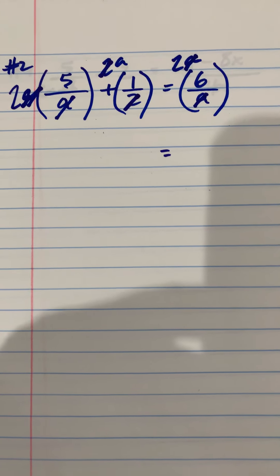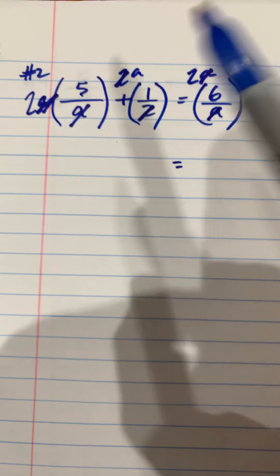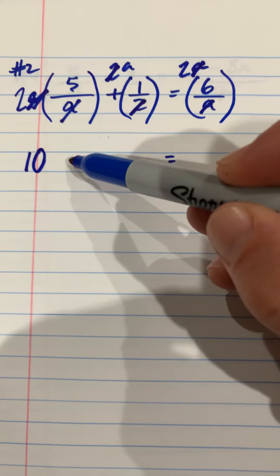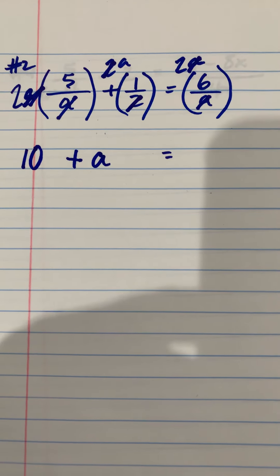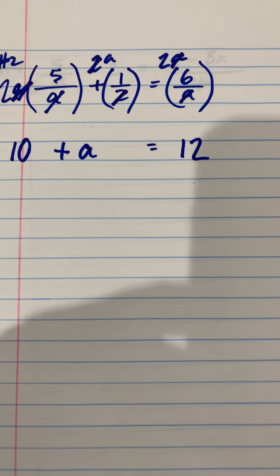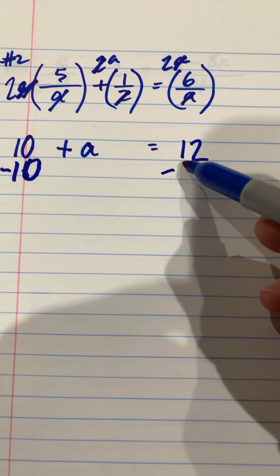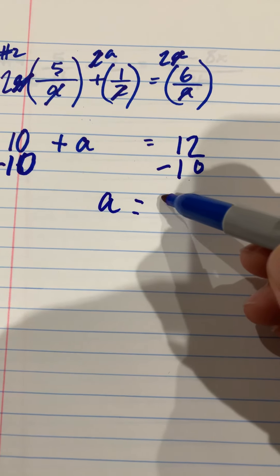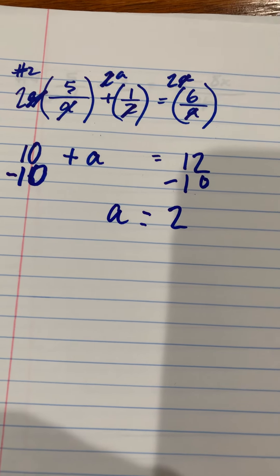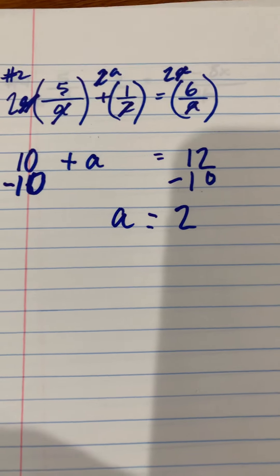So no more denominator there. Now we're just going to distribute what we have left. So it's 2 times 5 gives us 10, a times 1 gives us a, and 2 times 6 gives us 12. Now it's simple — just solve for a, so we subtract 10 from both sides and we've got a equals 2. That makes sense to everybody? This actually is number 2 from your work — so we just did one of them for you.